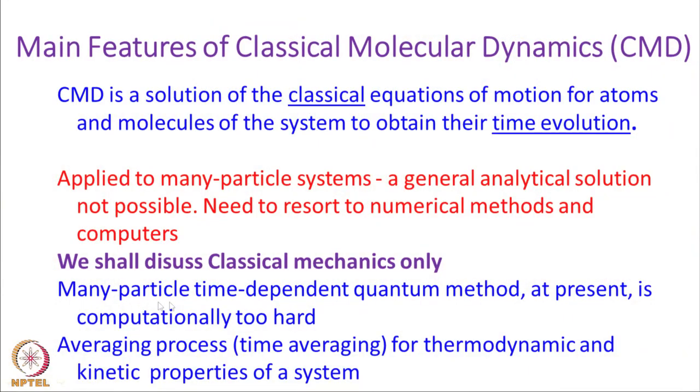For our purpose we will only discuss classical mechanics, because the many-particle time-dependent quantum method is computationally very hard — studying 100 electrons and several nuclei as a function of time is extremely difficult even today. After we evolve our system as a function of time, we will do time averaging: averaging over different members of the trajectory we have generated, and once we average, we get thermodynamics and kinetic properties of the system. That is our main goal — to do chemistry using classical molecular dynamics.